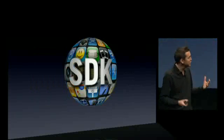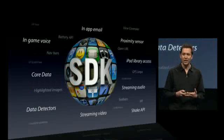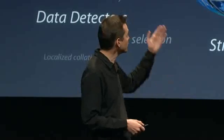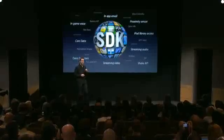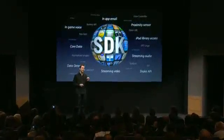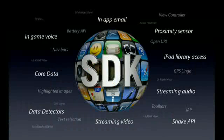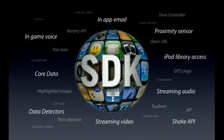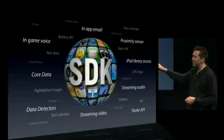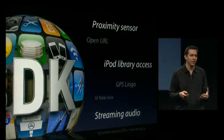These are only a few of the more than 1,000 APIs that make up the SDK in iPhone 3.0. Let me touch on just a few more. In-app email: we now have an email sheet you can use right from your application so you don't have to leave it to send an email. Proximity sensor is now a public API. iPod library access is a big one — developers can now access, browse, and play music right out of the built-in iPod library on the phone. And we're introducing a new standard for streaming audio and video.